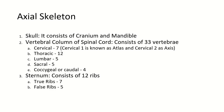The skull consists of the cranium and mandible. The vertebral column or spinal cord consists of 33 vertebrae, divided as: cervical 7, thoracic 12, lumbar 5, sacral 5, and coccygeal or caudal 4. Cervical 1 is known as atlas and cervical 2 is known as axis.